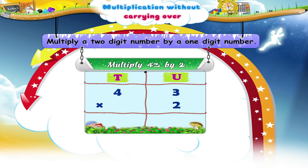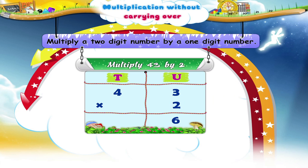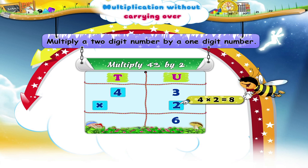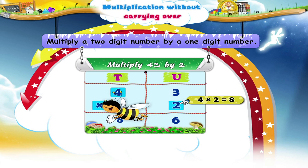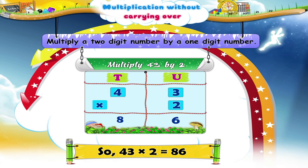You next multiply the units digit 3 in 43 by 2, and write the product 6 in the units place of the product. Now multiply the tens digit 4 in 43 by 2, and write the product 8 in the tens place of the product. Hence, 43 multiplied by 2 is 86. Wasn't that easy?